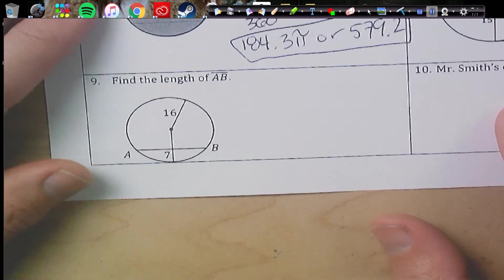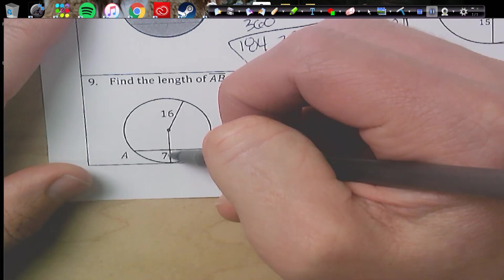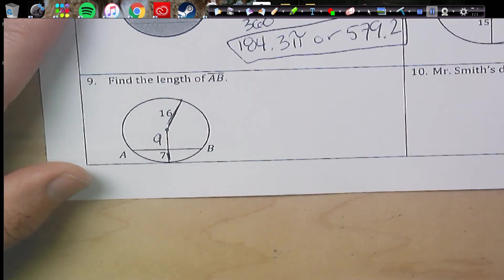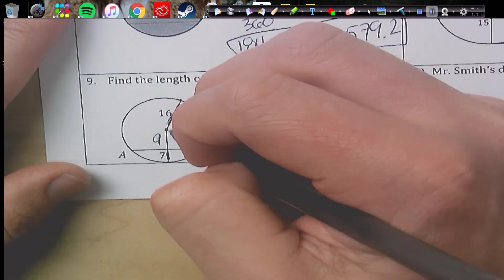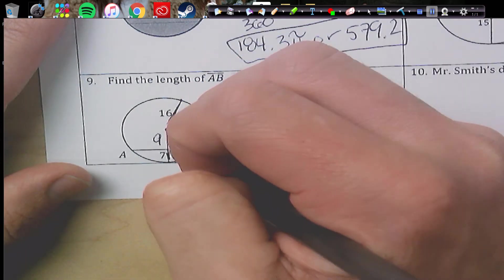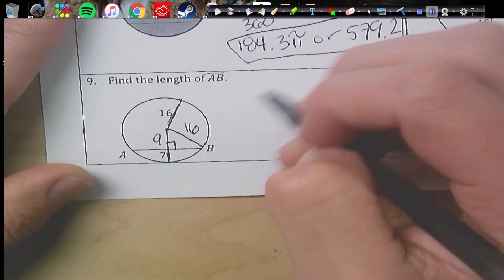And last but not least, right here, 7 is just this little bottom piece. If the whole thing is 16 here, 9 plus 7 would make 16 because they're a radius. So I'm going to draw up in my hypotenuse. We've got 16, 9, and a 90. So we can use Pythagorean theorem.